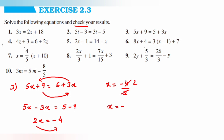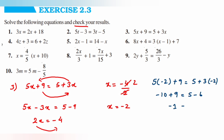Now we'll substitute x is equal to minus 2 to verify: 5 into minus 2 plus 9 is equal to 5 plus 3 into minus 2, giving minus 10 plus 9 is equal to 5 minus 6, so minus 1 is equal to minus 1. LHS is equal to RHS, meaning x is equal to minus 2 is the correct answer. Now the fourth question.